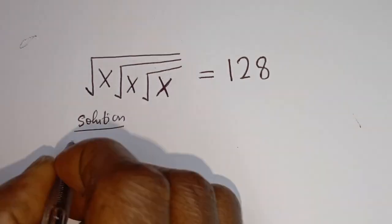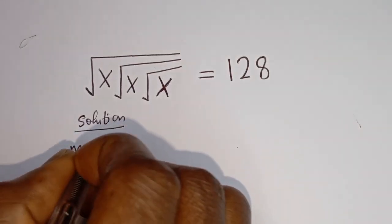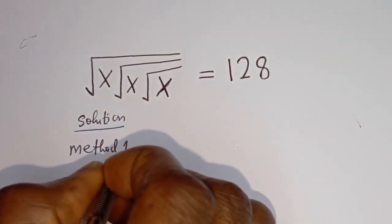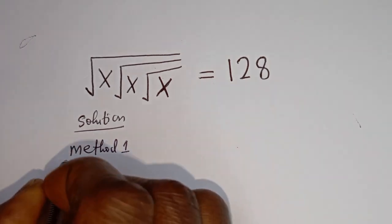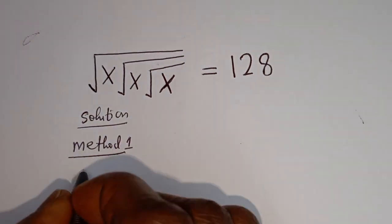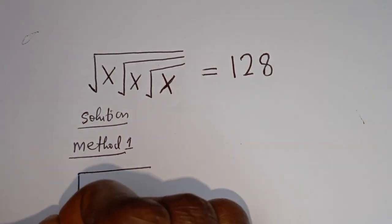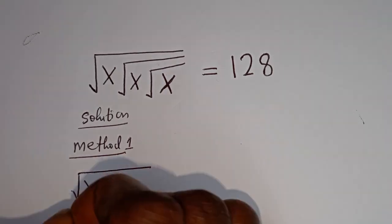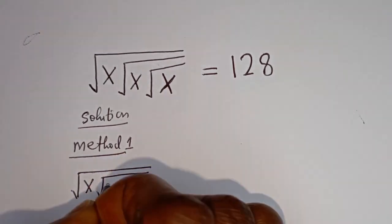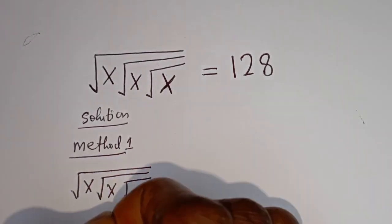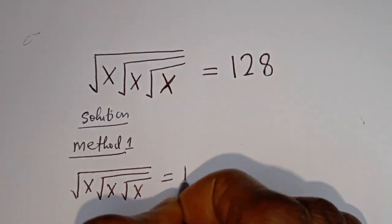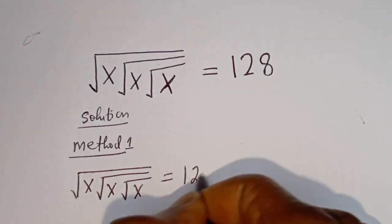Let's consider the first method, called Method One. We have square root of s, square root of s, square root of s is equal to 128.